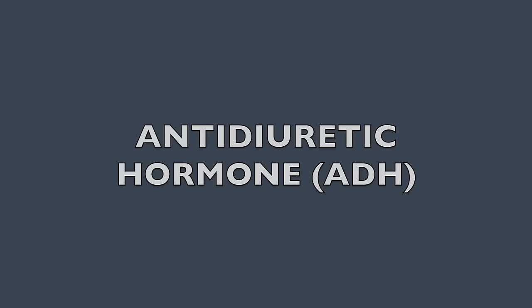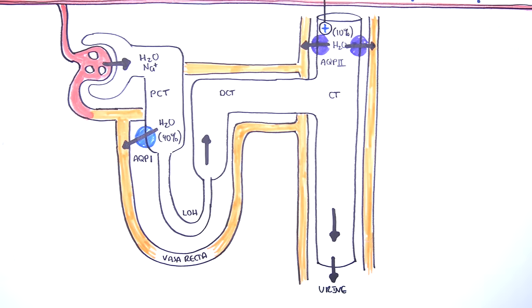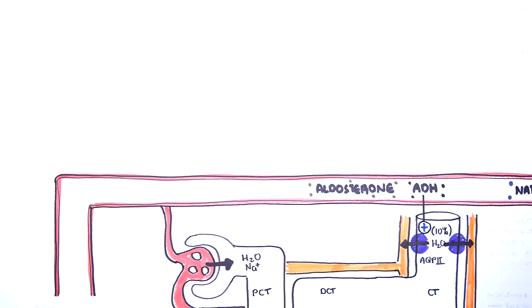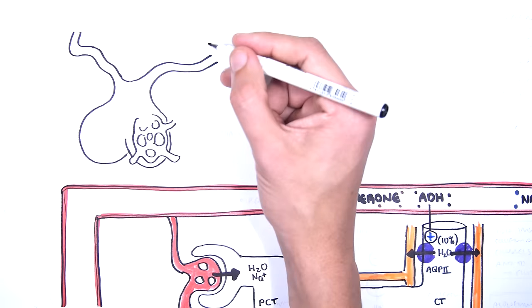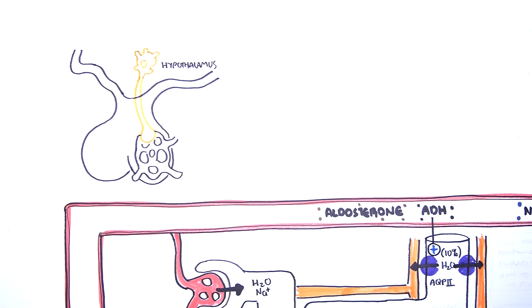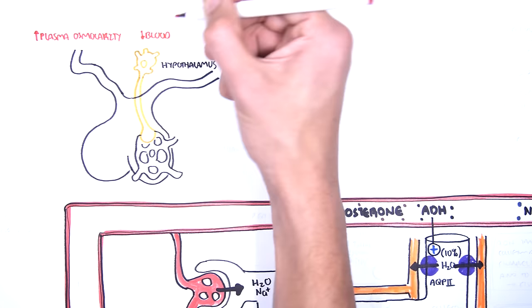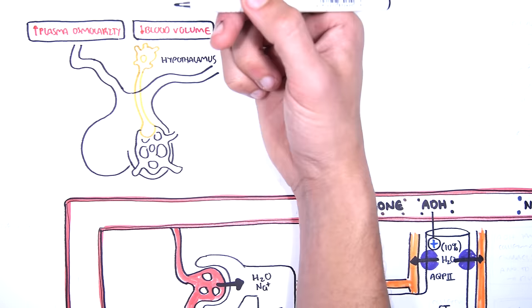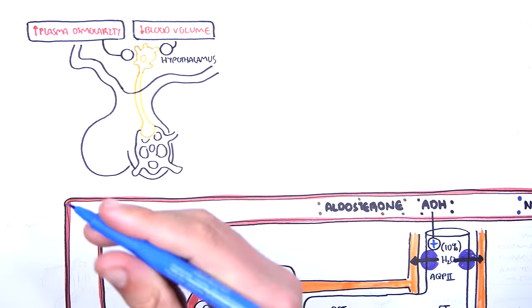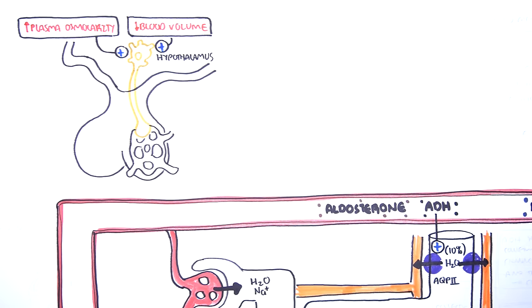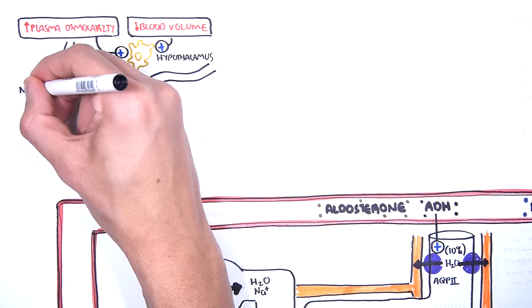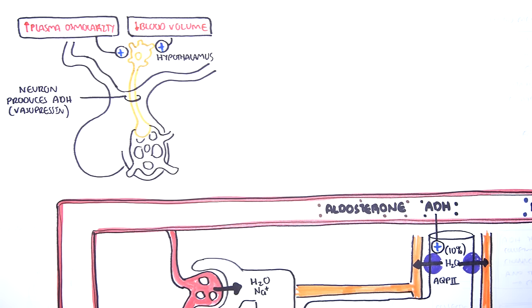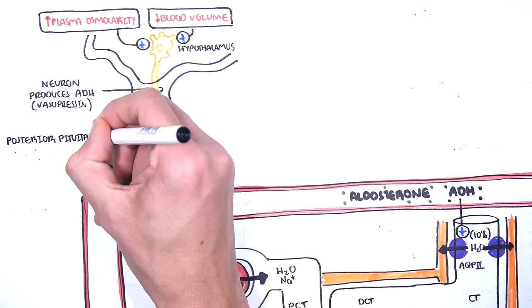So where does ADH come from? Well, ADH is secreted by the posterior pituitary gland. However, ADH is actually produced by the hypothalamus in response to an increase in plasma osmolarity or a decrease in blood volume. An increase in plasma osmolarity basically means when you have high solute levels in the blood in respect to water. Sodium is a strong stimulant here. If sodium levels are high and if the blood volume is low, it will stimulate the hypothalamus to produce ADH, which will then travel to the posterior pituitary to be released into circulation.